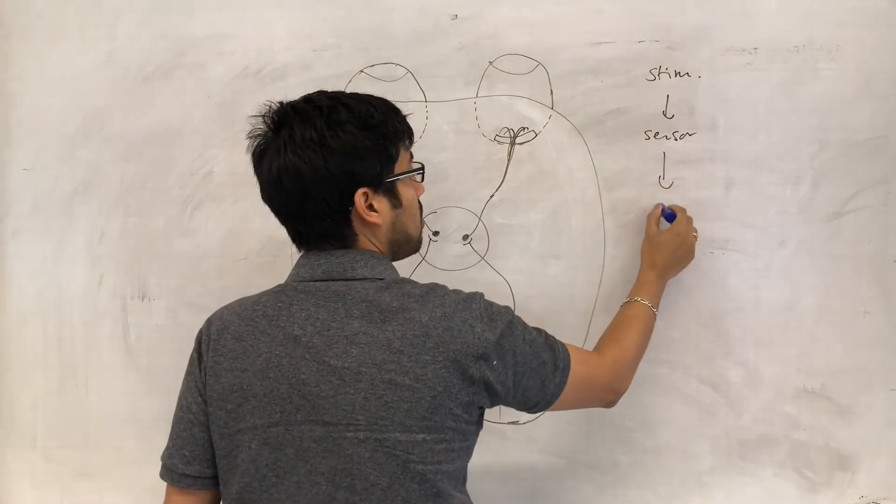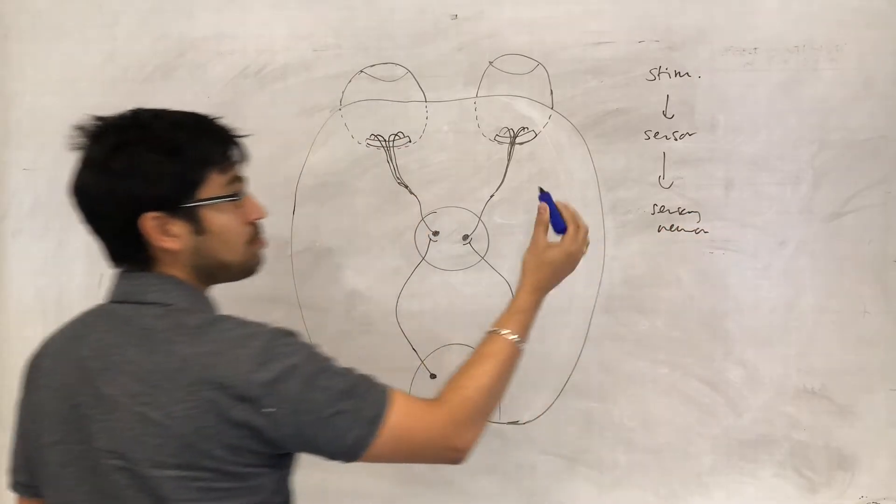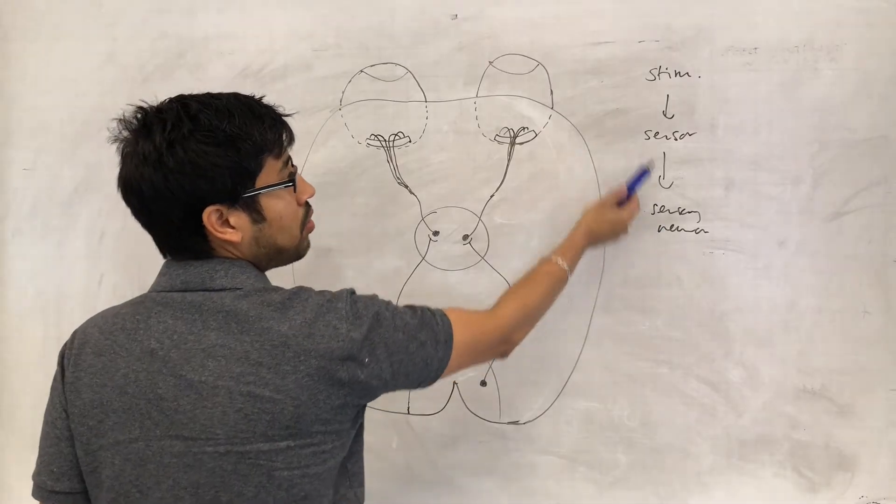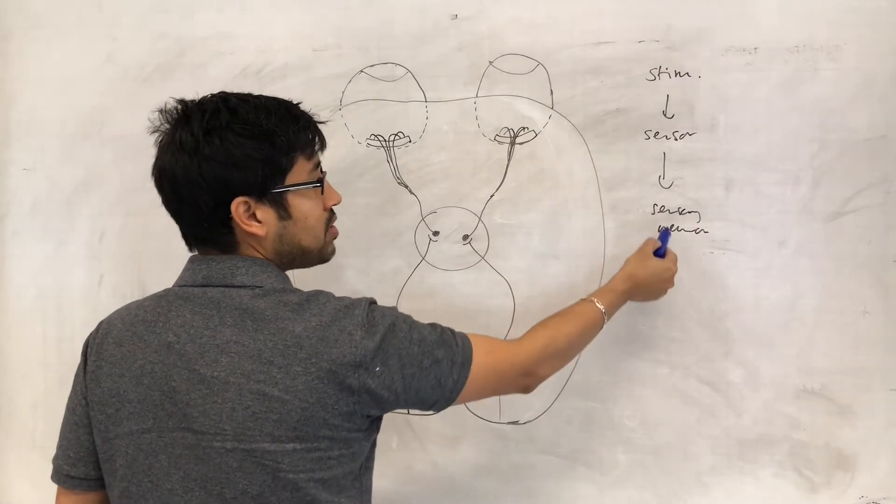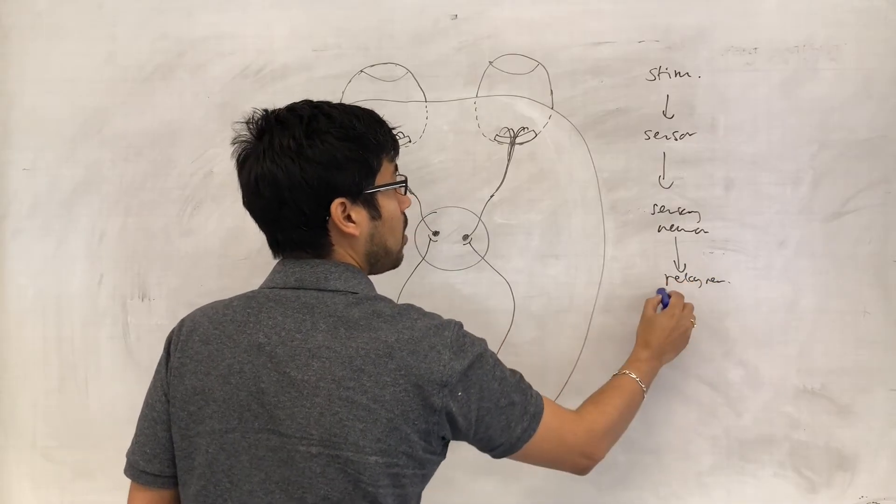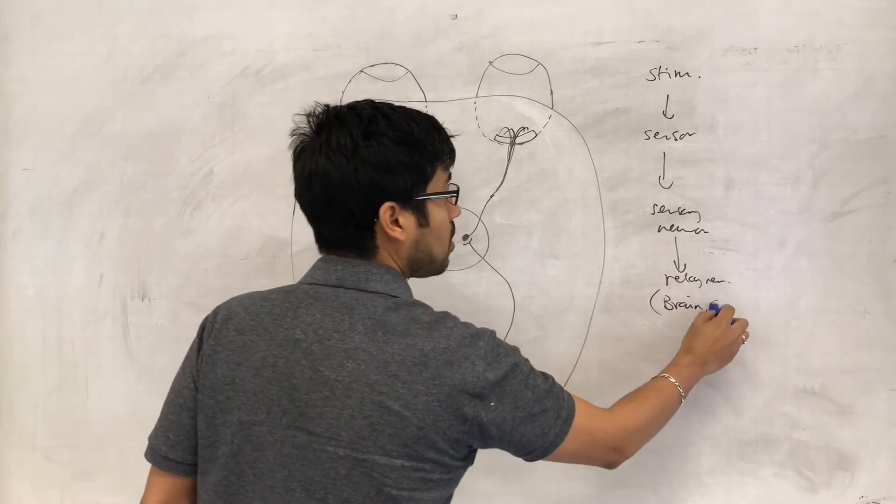Then you've got the sensory neurons that are going to have the impulses that have been created because of the sensor. Impulses pass along the sensory neuron, perhaps to the relay neuron or the brain for processing.